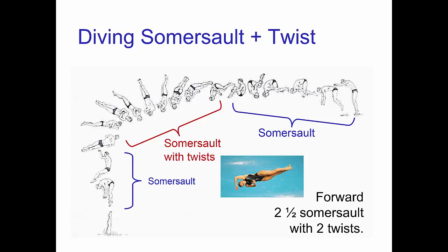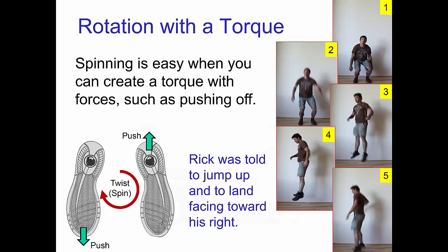Now let's see how a rotation is created. We'll look at a twist since it's easy to perform. To do a twist, you simply push in opposite directions with your feet as you're jumping. Knowing the direction you want to twist, you simply start the rotation while your feet are on the ground.